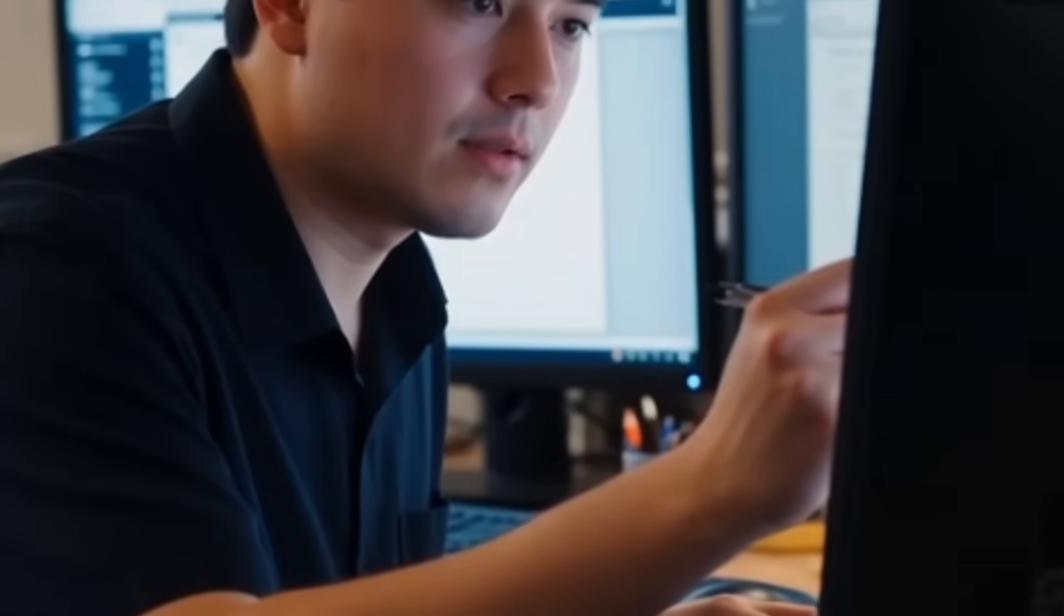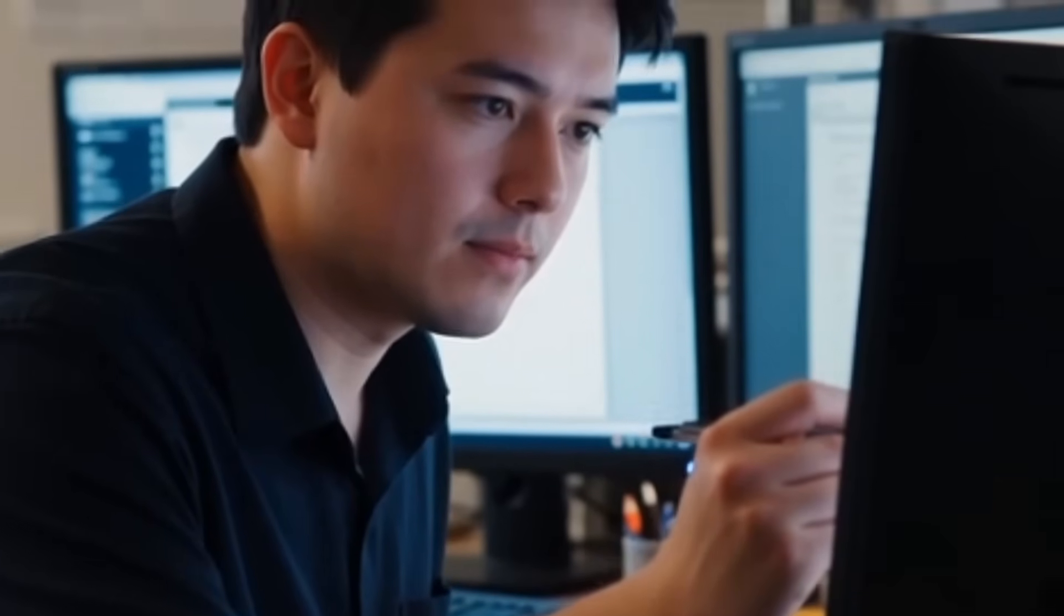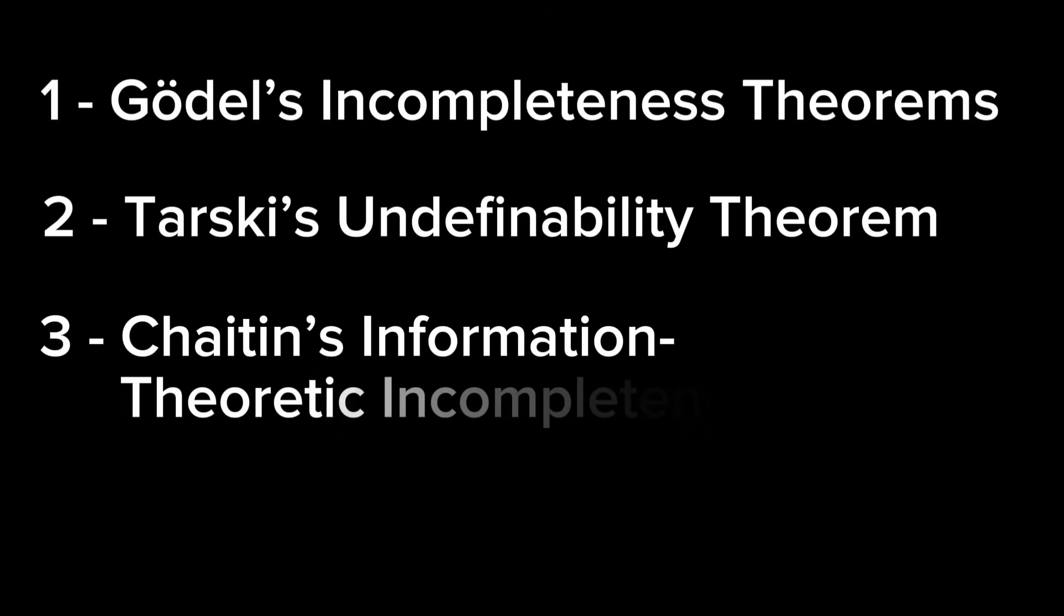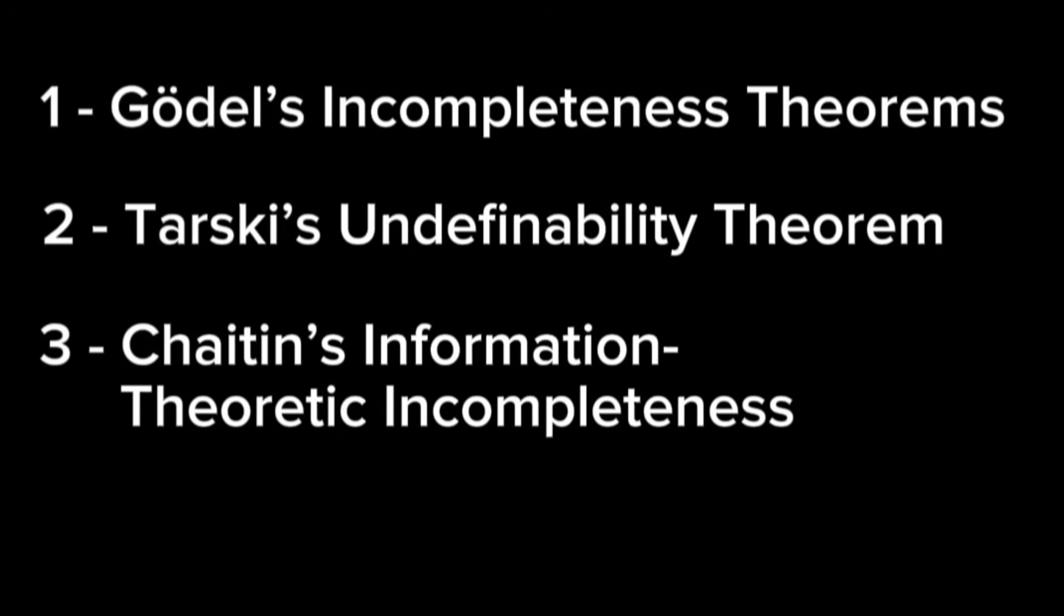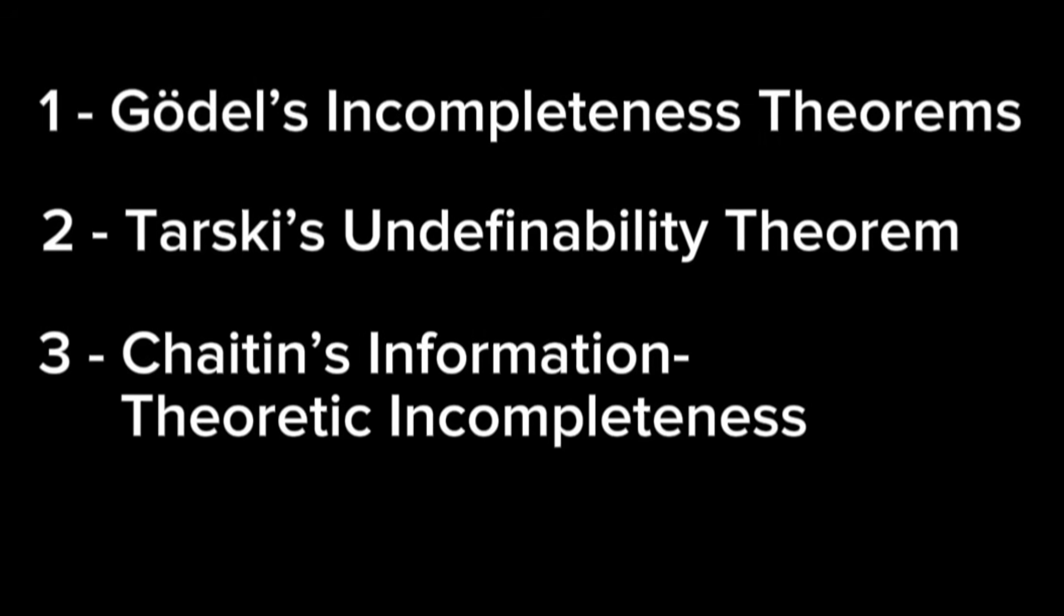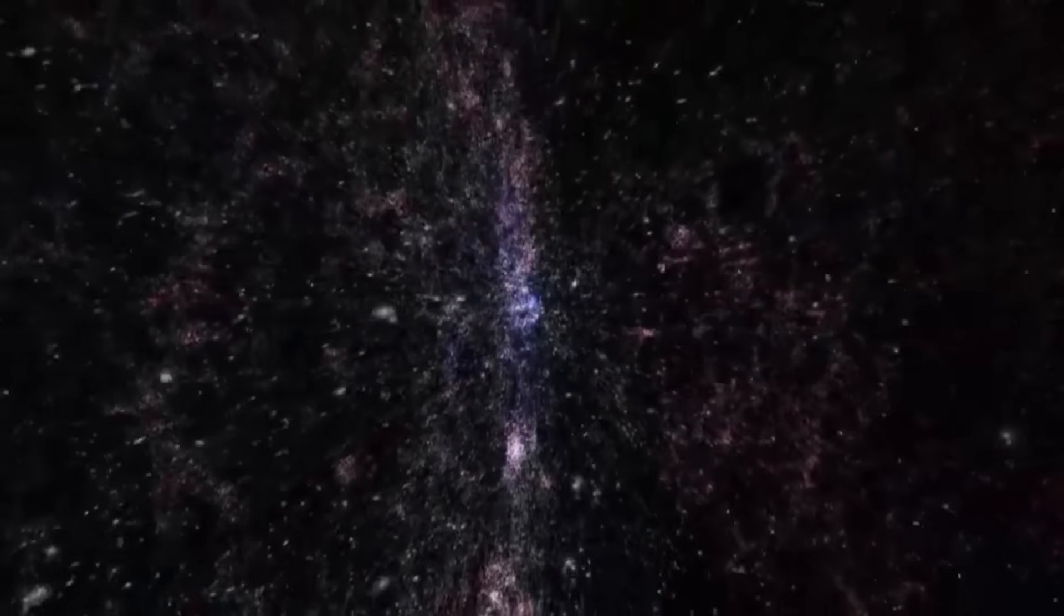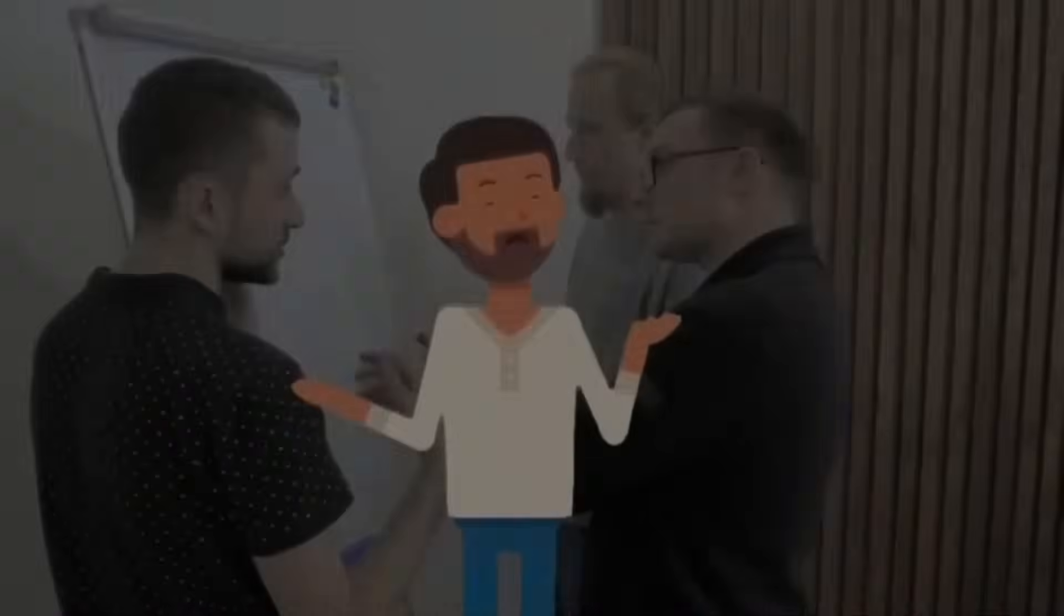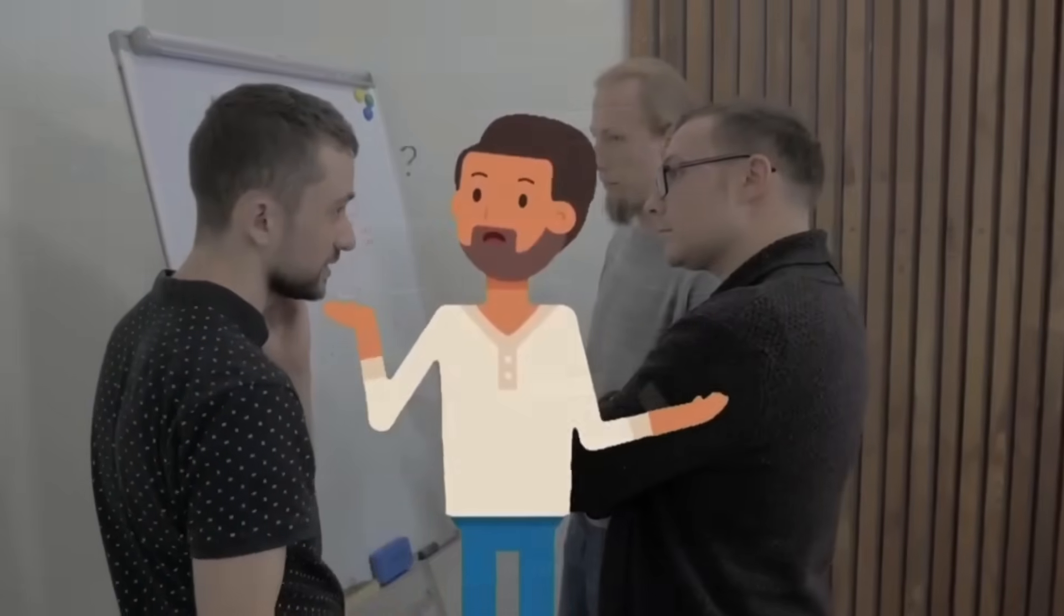researchers relied on powerful mathematical results including Gödel's incompleteness theorems, Tarski's undefinability theorem, and Chaitin's information theoretic incompleteness. At first, these may sound like abstract mathematical concepts, but they have direct consequences for understanding the universe itself, and the simplified result is shocking.